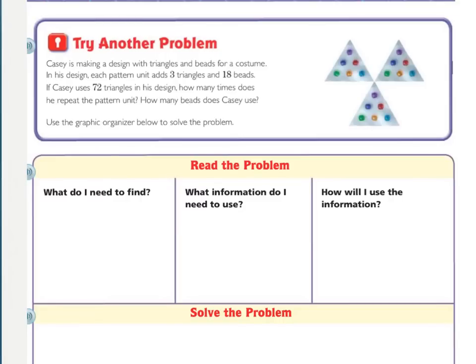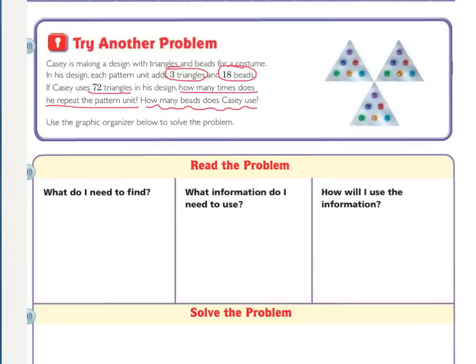Time to try another problem. Casey is making a design with triangles and beads for a costume. In his design, each pattern unit adds 3 triangles and 18 beads. If Casey uses 72 triangles in his design, how many times does he repeat the pattern unit? How many beads does Casey use? Underline what you're being asked to find and circle the important information. This one has two things to find — make sure you write those down. You should have circled how many triangles, how many beads, and the total number you're trying to reach to find missing pieces.